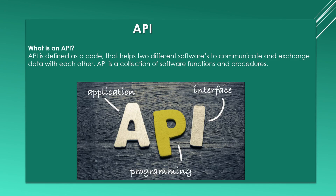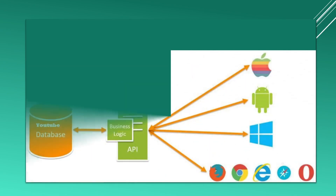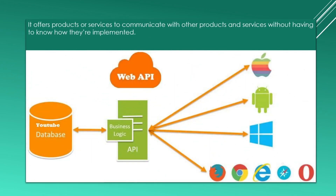Now the question is: how do two different software communicate? Let's take an example to understand how communication happens using an API. A user has only a browser when he runs a video on YouTube from his mobile or laptop browser.